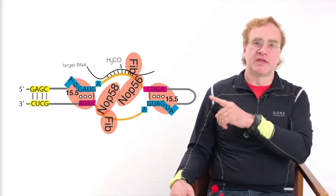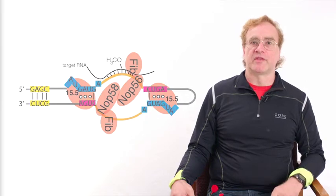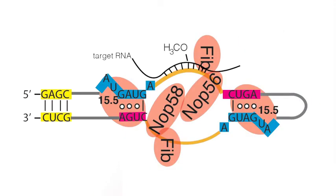As you can see here, the C and D boxes in the final assembly are closed together. They are stabilized by a protein called 15.5, and then there are two proteins, NOP56 and NOP58, that act as space holders.